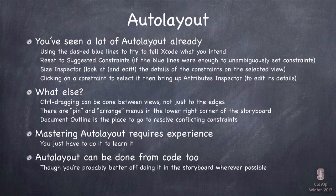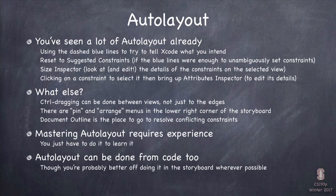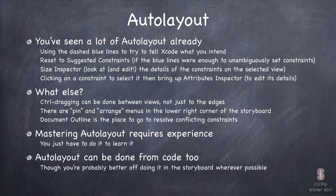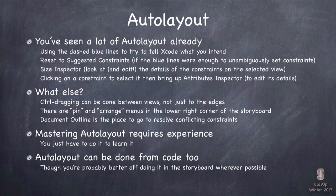Auto Layout is also doable from code — there's a class, NSLayoutConstraint, which has all the functionality that is in the storyboard. We rarely use it because we can do pretty much everything from the storyboard. But you can do some tricky things in code that you can't do in storyboard. I won't have time to teach it, but if you're interested — maybe for your final project — you can start with NSLayoutConstraint in the documentation and go from there.